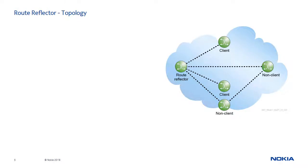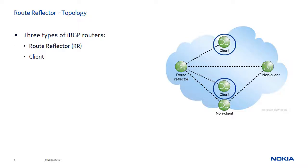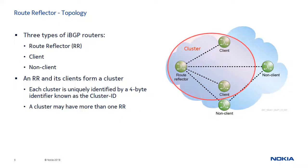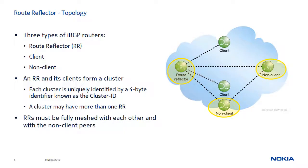When using route reflectors, iBGP speakers are classified into three groups: route reflectors, route reflector clients, and regular iBGP speakers or non-clients. An RR and its clients form a cluster that is uniquely identified by a 4-byte cluster ID, and peers that are not part of this cluster are considered non-clients. With route reflection, the full iBGP mesh is required only between RRs and between RRs and non-clients. Client peers should have iBGP sessions only with the RRs in their cluster, and therefore do not need to have sessions with each other.